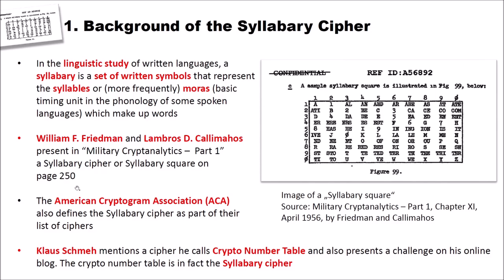Before we start discussing the syllabary cipher, it is good to have a background of the cipher. What actually is a syllabary? In the linguistic study of written languages, a syllabary is a set of written symbols that represent the syllables or more frequently moras. Moras are basic timing units in the phonology of some spoken languages which make up words. Here on the right side, you can see such a set of syllabaries. This is from Friedman and Callimahos and was declassified only a few years ago by the NSA. Military Cryptanalytics is a very interesting book, so I highly suggest that you have a look at it.